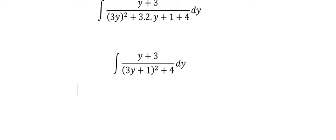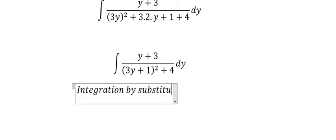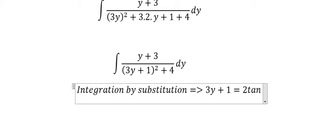The first thing we will do is integration by substitution. So we change 3y plus 1 equal to 2 times tan u because we want to arrange everything in here, and we can simplify the denominator.